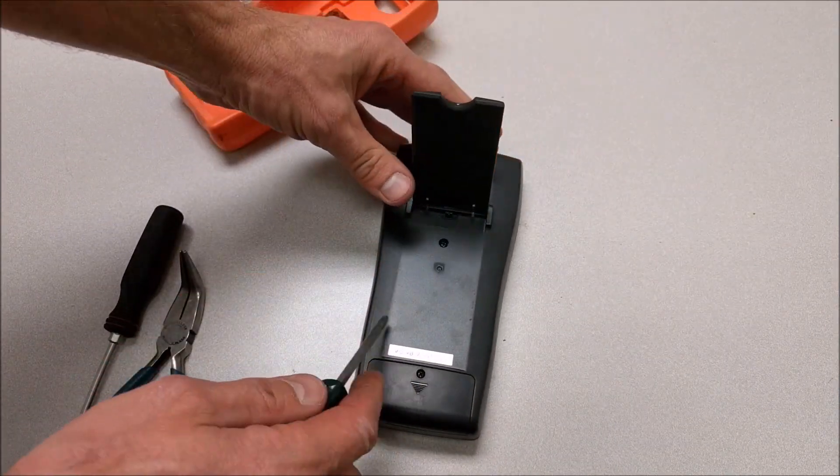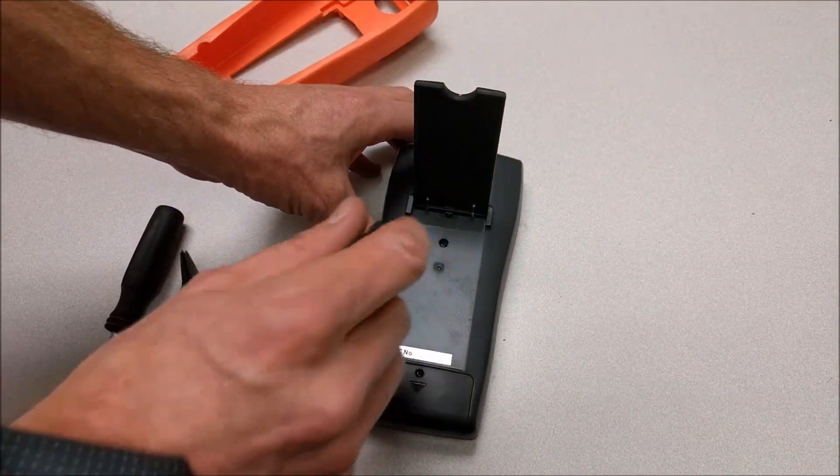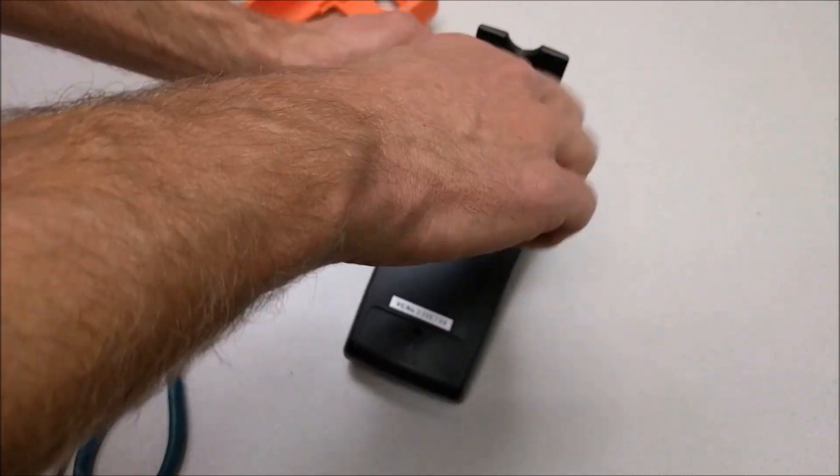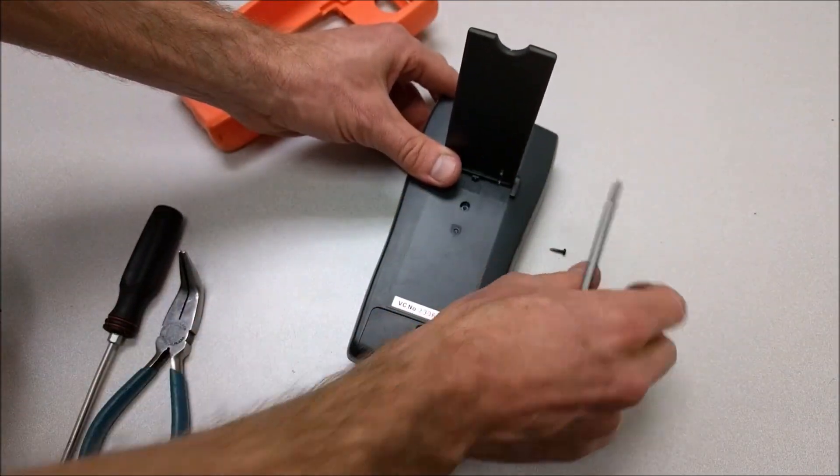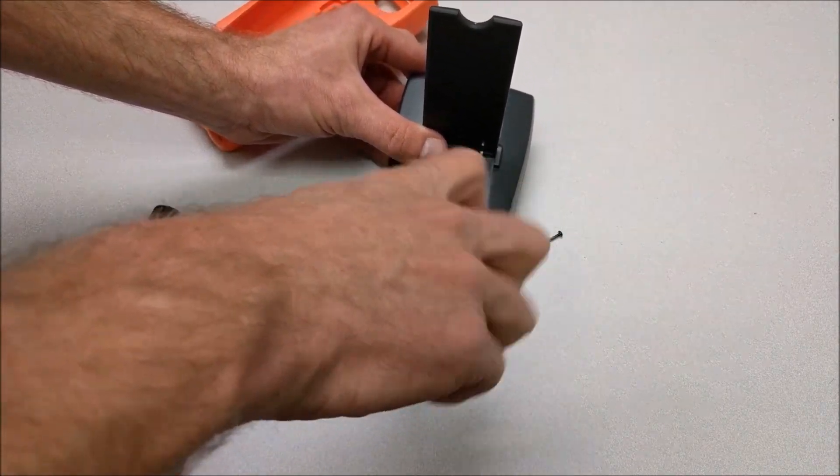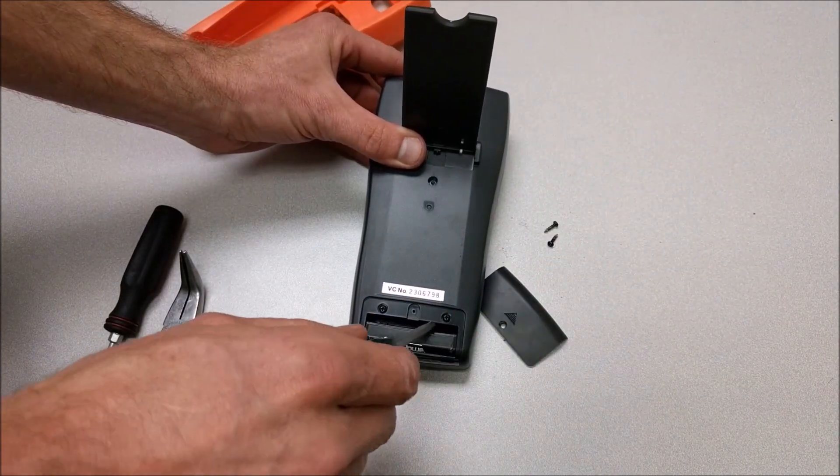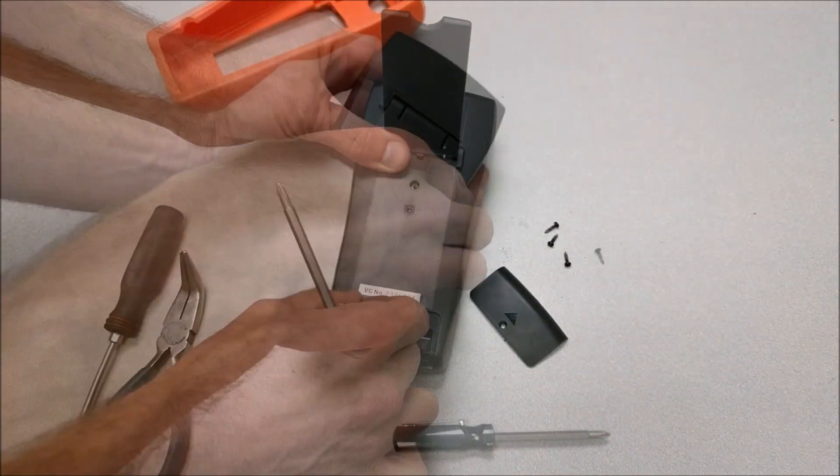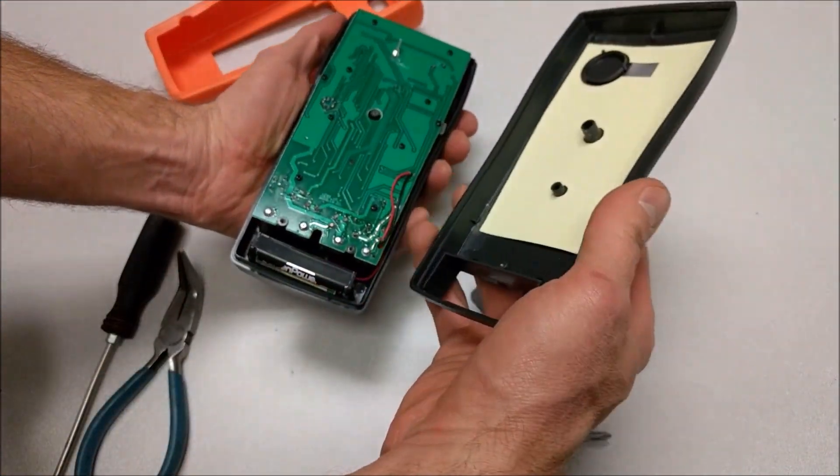So this one is fairly easy to get apart. I've got a screw here in the center. I'll take it out. And I've got to take off the battery cover on this one, which will, in turn, expose a couple more screws. Once I do that, the back should come off. Set that to the side.